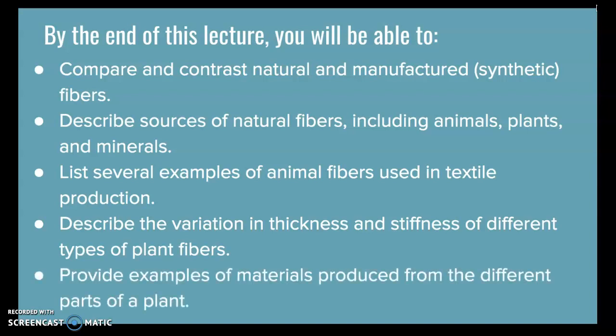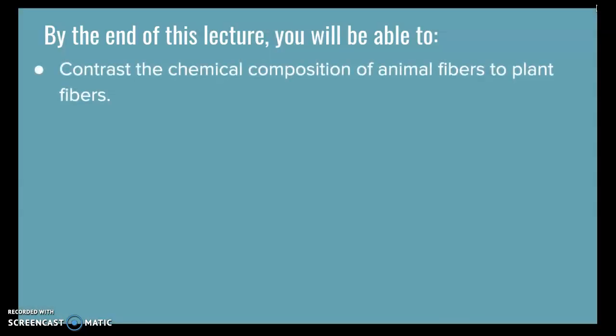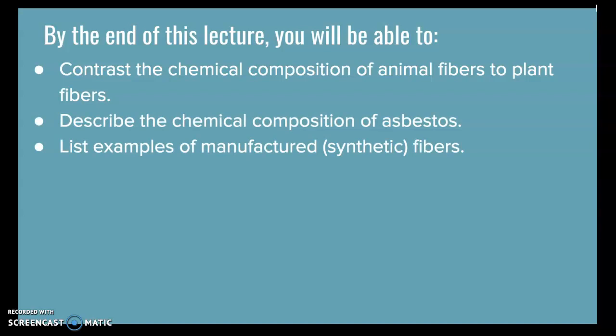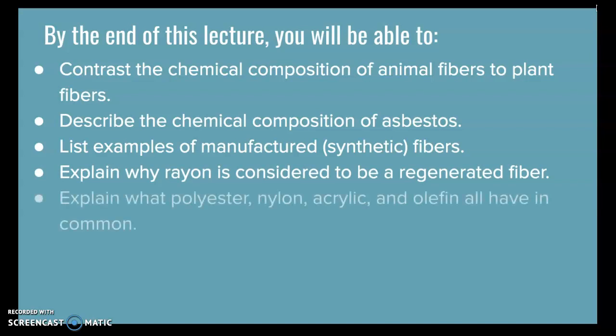You should also be able to provide examples of materials produced from different parts of a plant, contrast the chemical composition of animal fibers to plant fibers, describe the chemical composition of asbestos, list examples of manufactured or synthetic fibers, explain why rayon is considered to be a regenerated fiber, and explain what polyester, nylon, acrylic, and olefin all have in common.